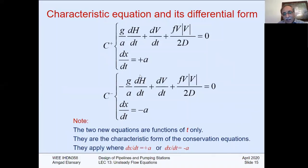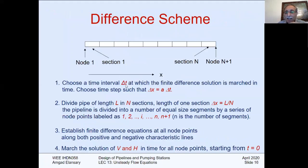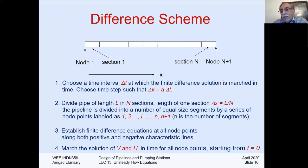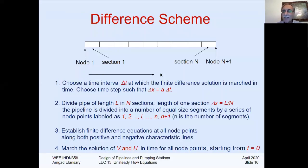We choose a time interval delta t in such a way to make the condition valid. Remember, this equation is valid only if dx by dt equals plus a or minus a. So if I choose delta t such that delta x over delta t equals a, I confirm and guarantee that this equation will be solved properly. My selection of delta t is crucial. Delta t and delta x together must satisfy delta x equal to a times delta t, which guarantees the condition for applying the characteristic equation.